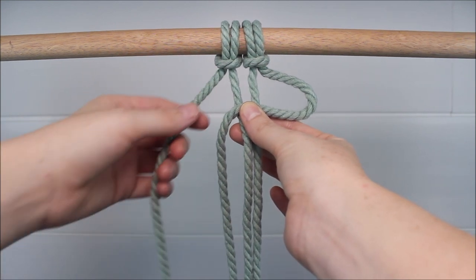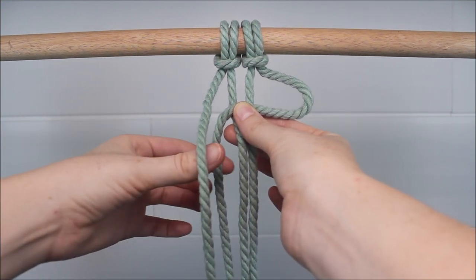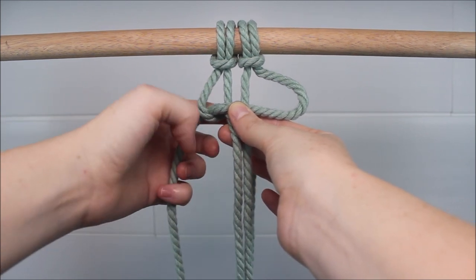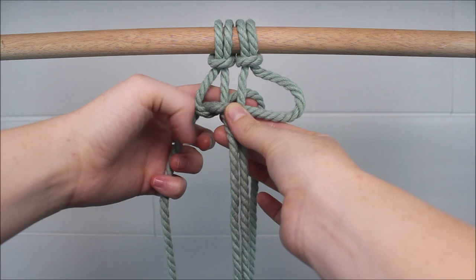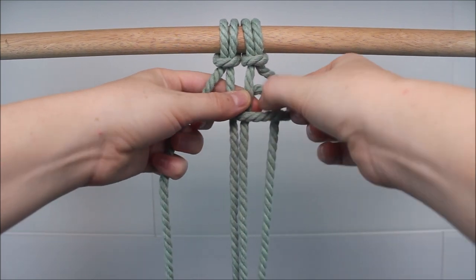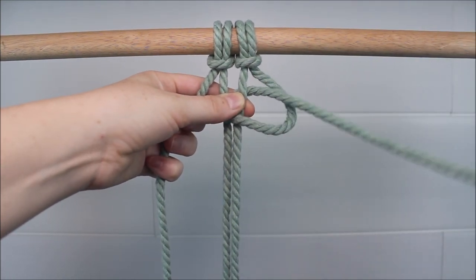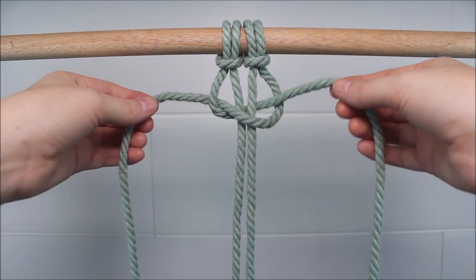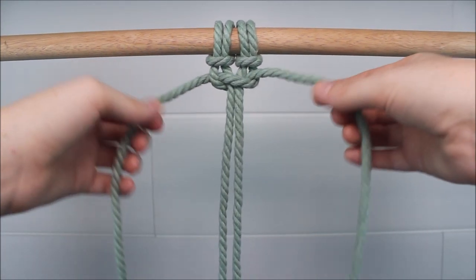Then I take the cord on the very far left and I'm going to send it over that cord that was on the right. I send it all the way behind the two cords in the middle and then pull it up through the loop. Then you can take both ends of your cord and pull on them gently together to tighten up the knot.